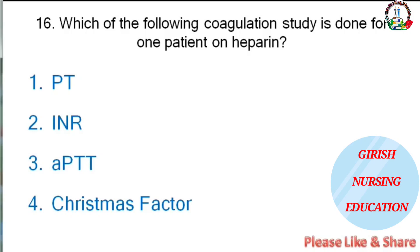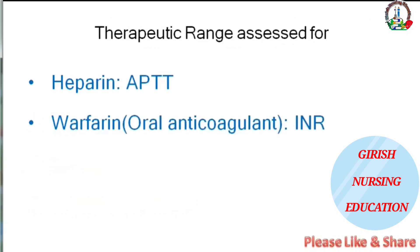Which coagulation study is done for a patient on heparin — prothrombin time, international normalization ratio, APTT, or Christmas factor? The correct answer is APTT. Therapeutic range for heparin is assessed by APTT level; for warfarin (oral anticoagulant), it is the international normalization ratio.